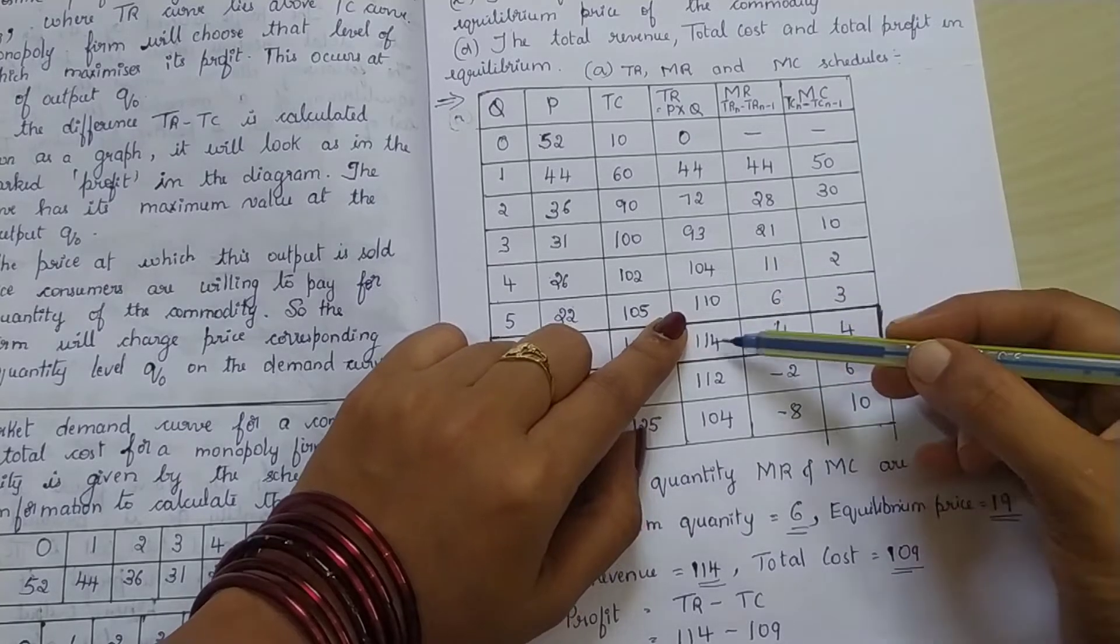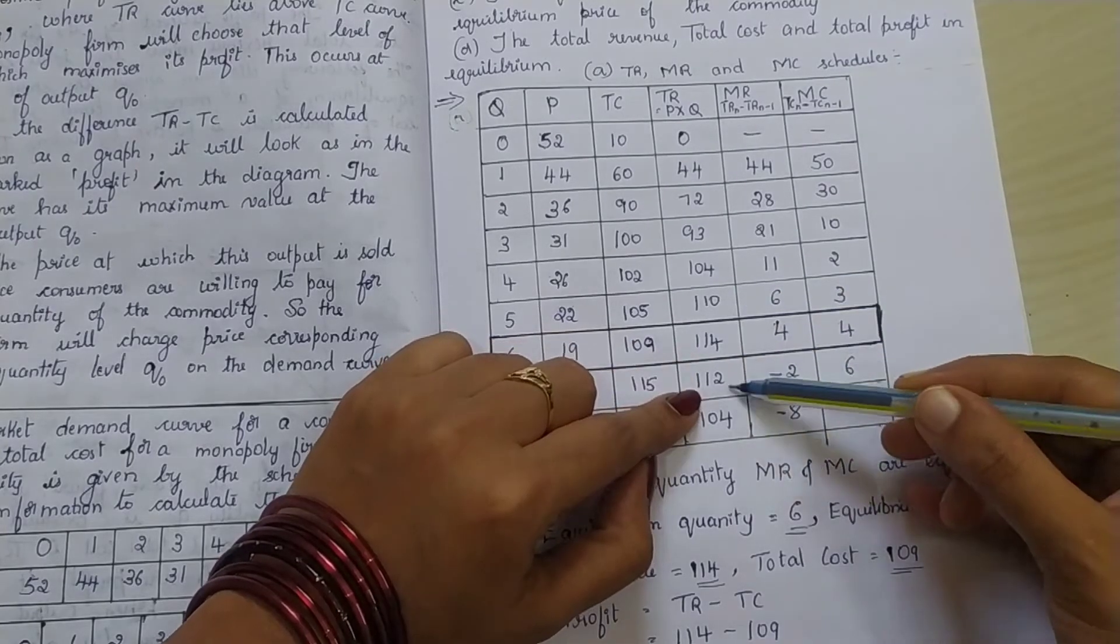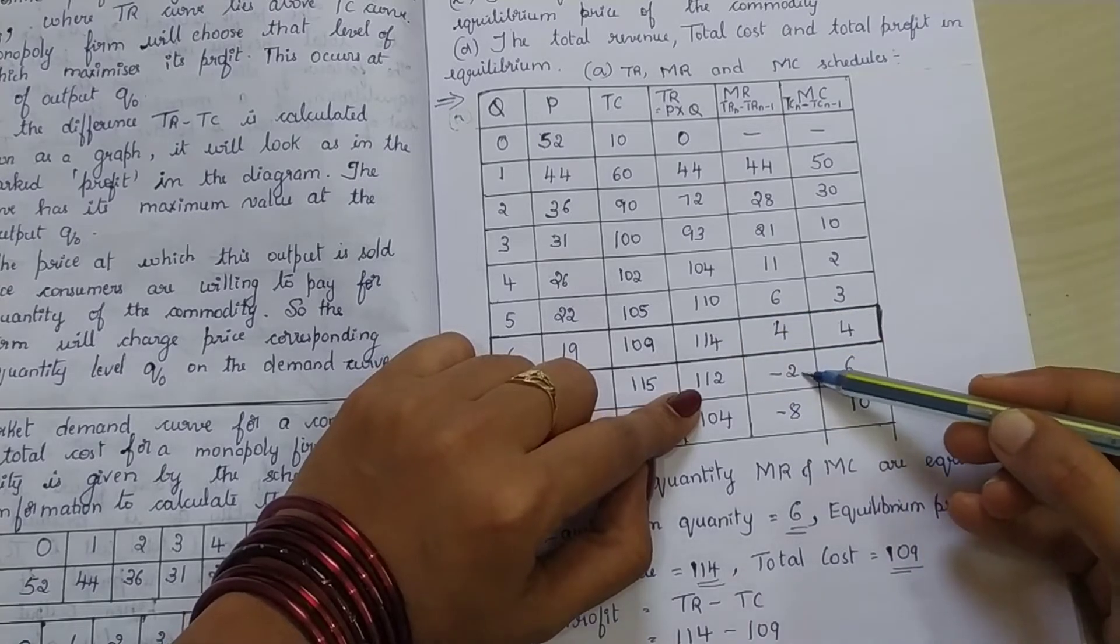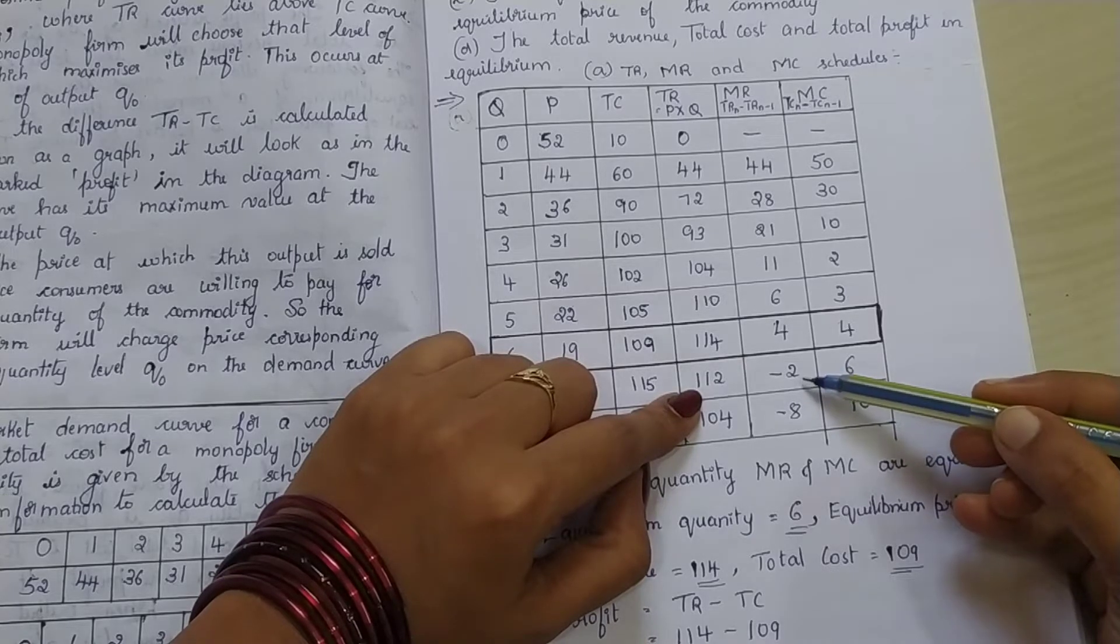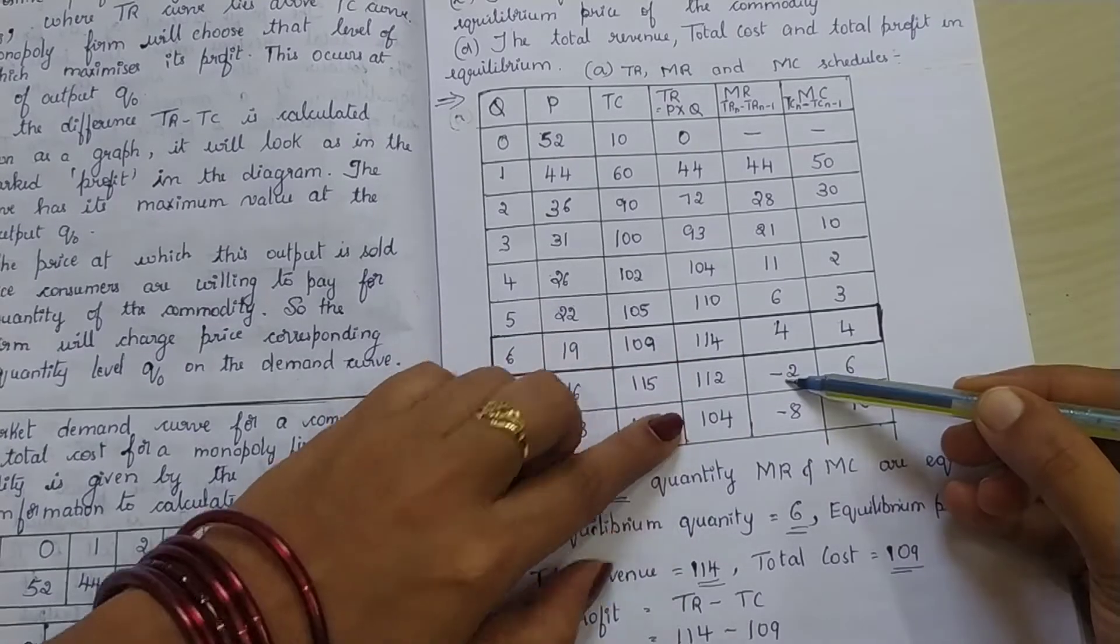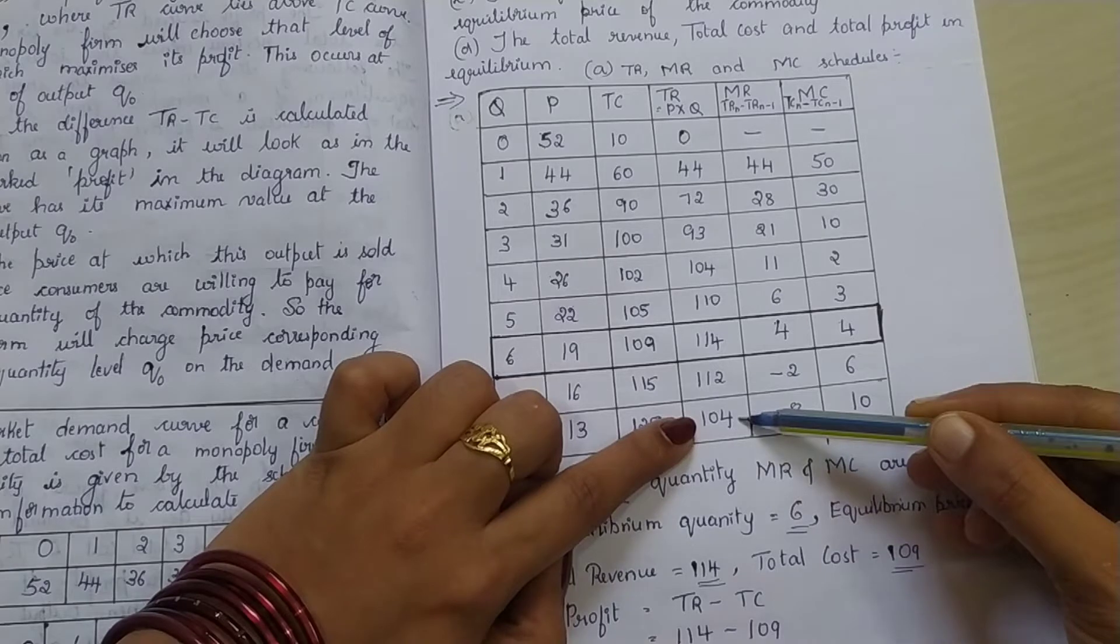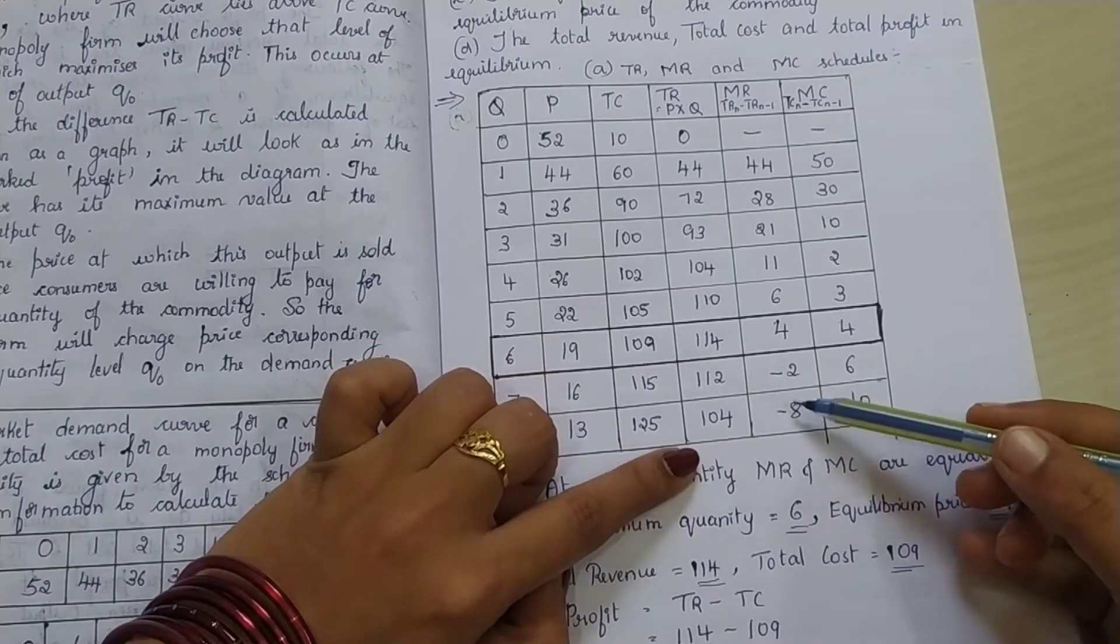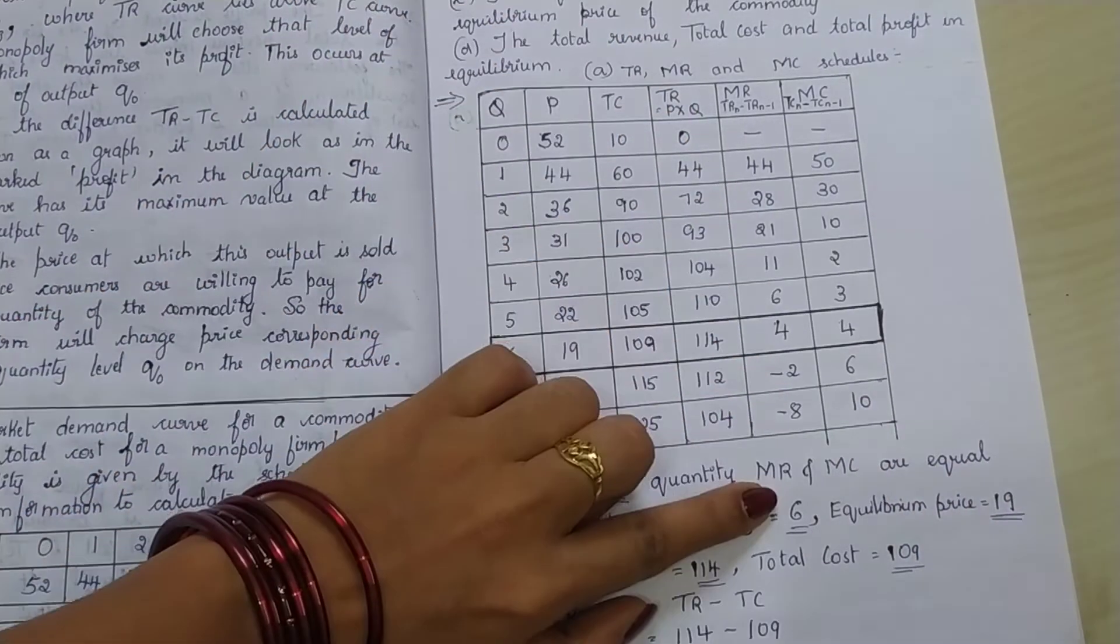Next, 114 minus 110, that is 4. Next one, 112 minus 114, that is minus 2. Don't skip the minus. I have told you that marginal revenue can have negative values. In the previous videos, I have told you that, right? So, 112 minus 114, it is minus 2. You can use the calculator, you will get minus 2 answer. Next one, 104 minus 112, that is minus 8. Again, I am saying, don't skip the minus. You have to write the minus if you are getting minus, okay? So, marginal revenue column is complete.